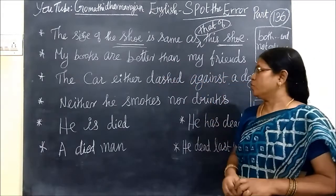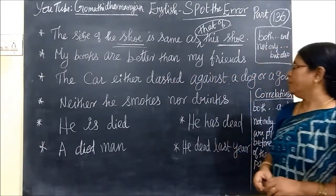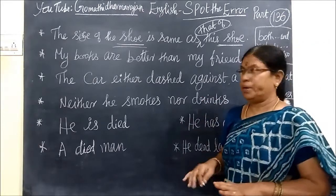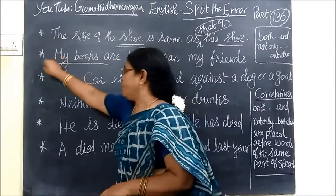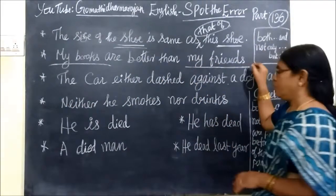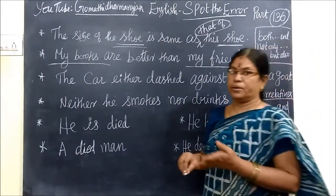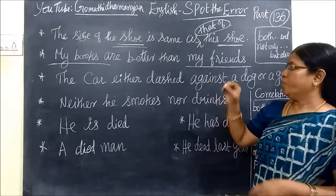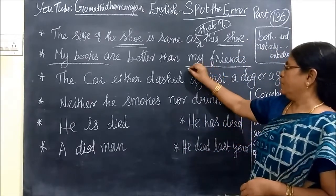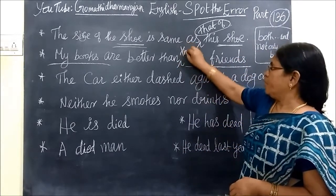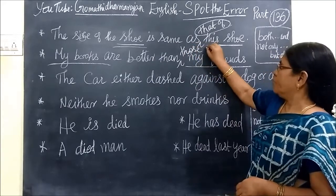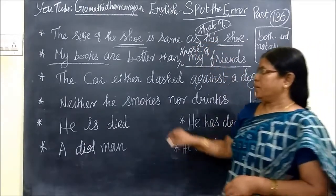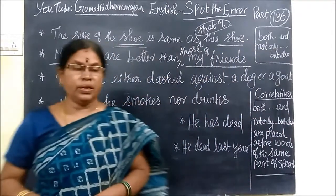See the next one. My books are better than my friends' — corrected: my books are better than those of my friends. In the plural form, we are using 'those of'.